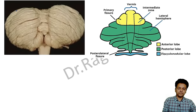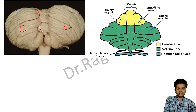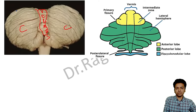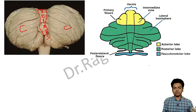Like the cerebral hemispheres, the cerebellum has two cerebellar hemispheres. These two hemispheres are connected by a worm-like structure in the middle called the vermis, because of its worm-like appearance.